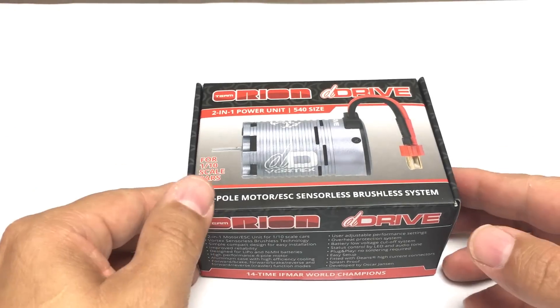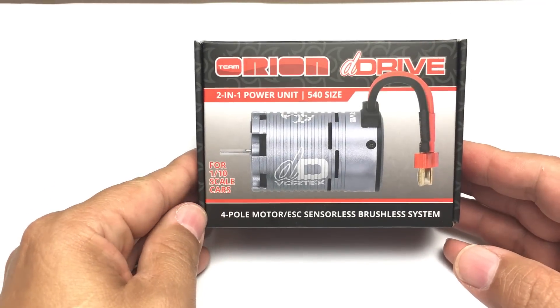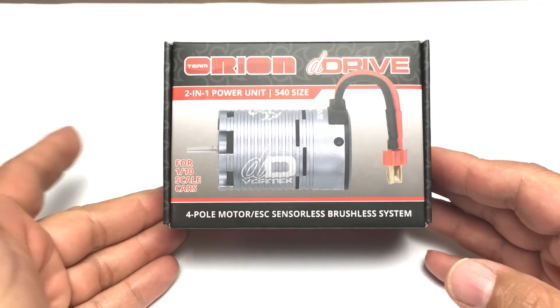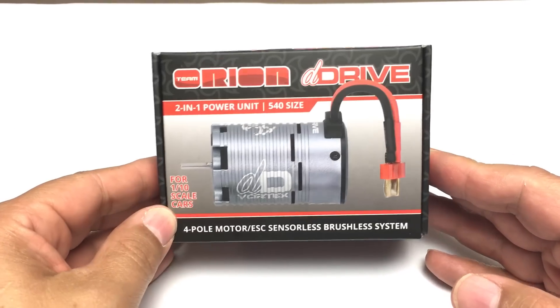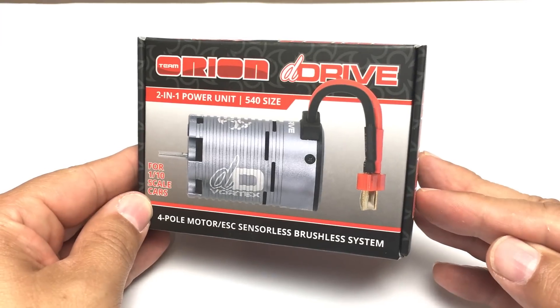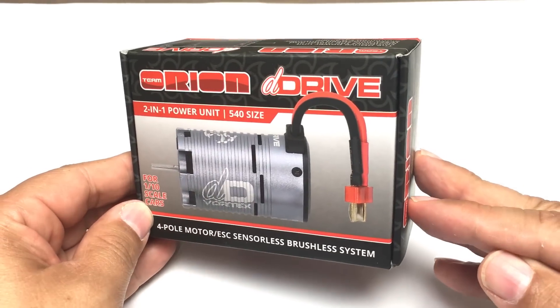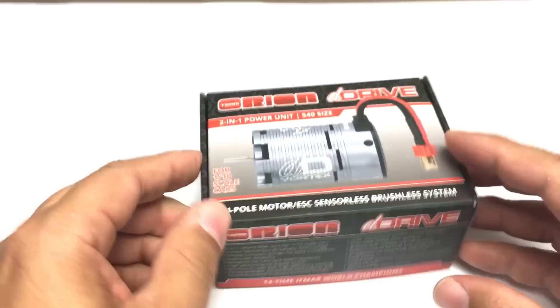Hey, Pete here from RC Car Action Magazine and what we have here is a Team Orion D Drive which looks like a brushless motor because it is, but it's not just a brushless motor. What this is is a motor with a speed control integrated right into it. You can see the battery connector right on the motor there.